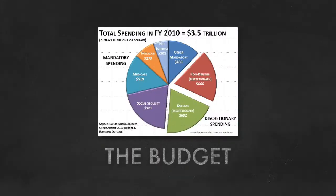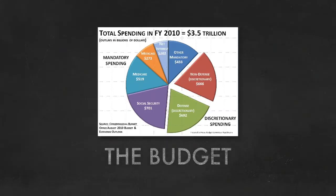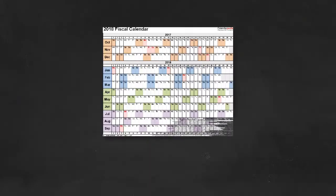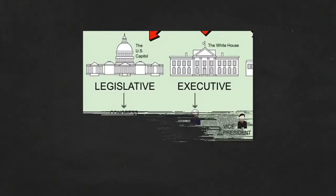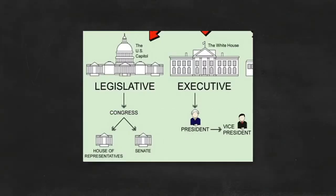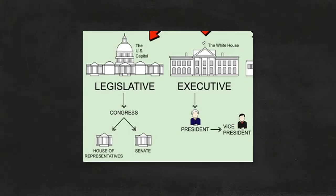The United States has a budget — an amount of money it's going to spend. Unlike my budget, the United States will spend trillions of dollars. The fiscal calendar starts in October and ends in September. What allocations make it to the budget is going to be determined by the legislative branch and the executive branch working together.